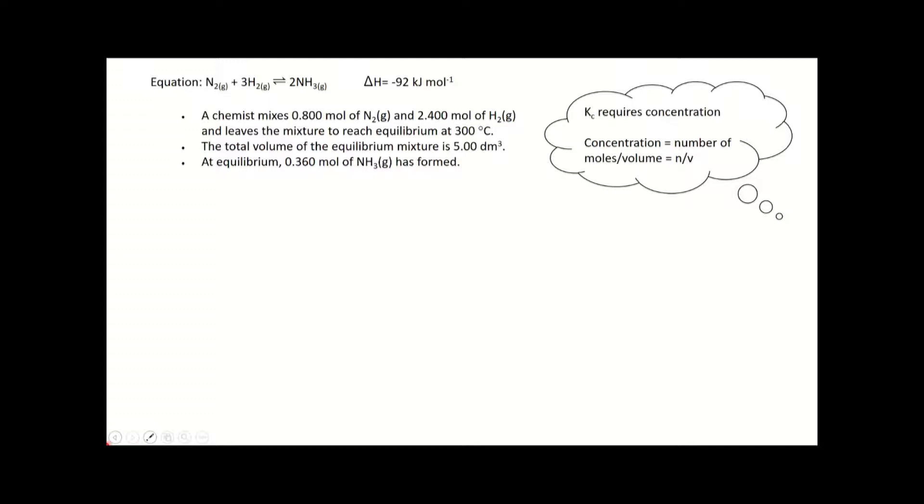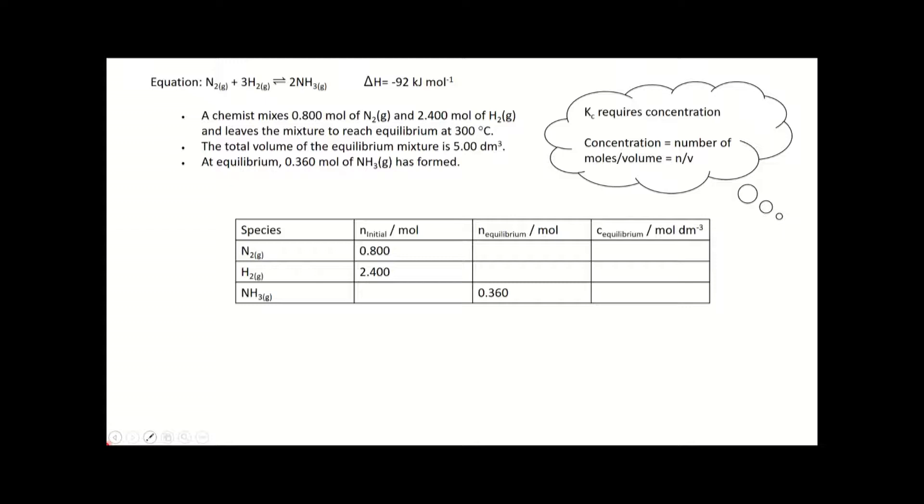Concentration is moles divided by volume, or n over V. We're going to work out the number of moles of everything at equilibrium and initially, so I've put a little table together. I really recommend putting your answer in table form. It doesn't have to be neat in an exam, but if you have it ordered with clear headings, that will help the examiner work out where you've made a mistake and make it easier to give you error carried forward. There's usually plenty of space on the exam paper for this kind of working out.